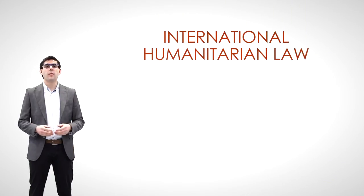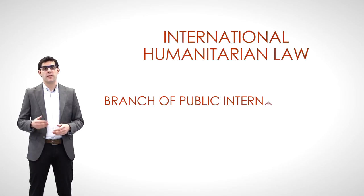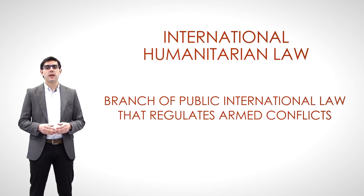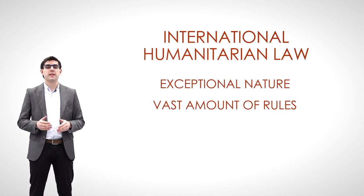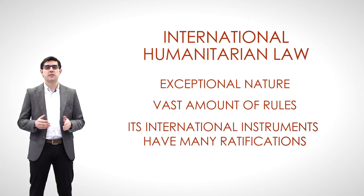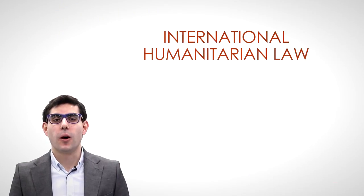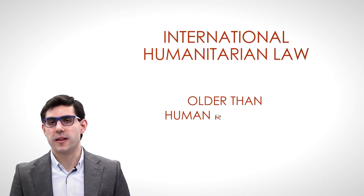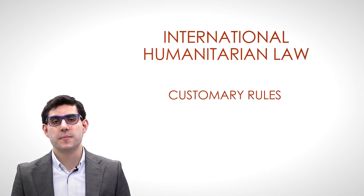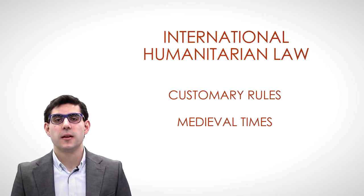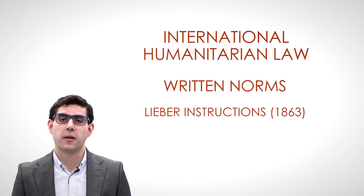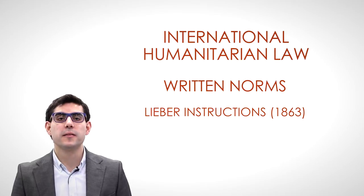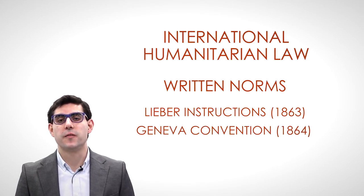International humanitarian law is the branch of public international law that regulates armed conflicts. It is of exceptional nature, it has a vast amount of rules, and its international instruments have more ratifications than any other branch of international law. Humanitarian law is much older than human rights law; its customary rules can be traced back to medieval times. Its written norms date back to the Lieber Instructions for the United States Army during the American Civil War and the first Geneva Convention of 1864.